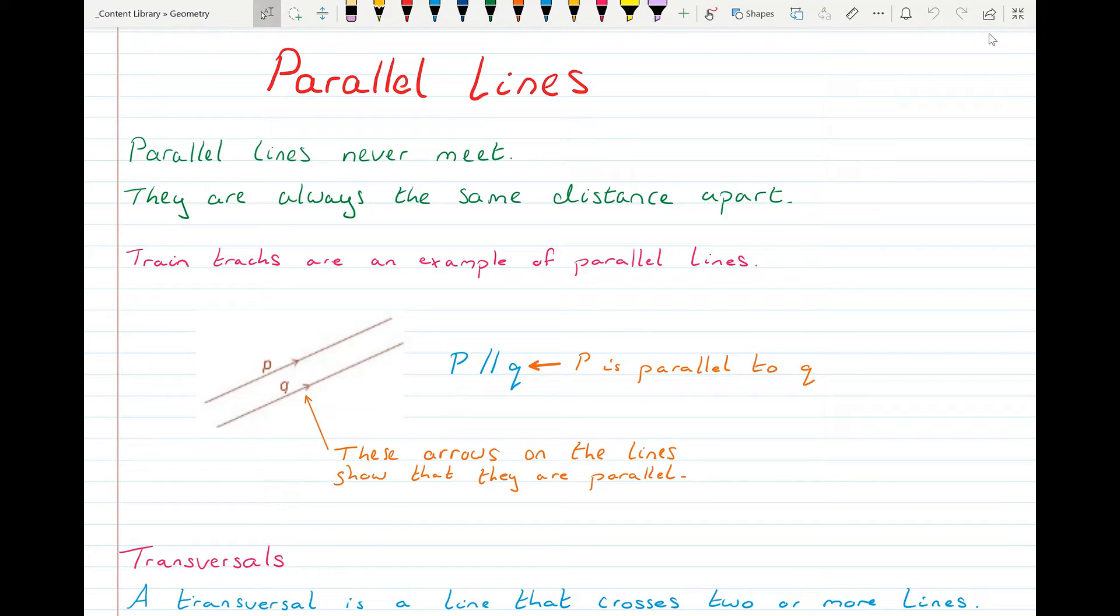So parallel lines are a special set of lines and what it means is they will never meet. Parallel lines are always going to be the same distance apart and they have the same slope.